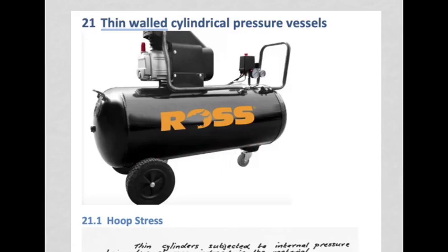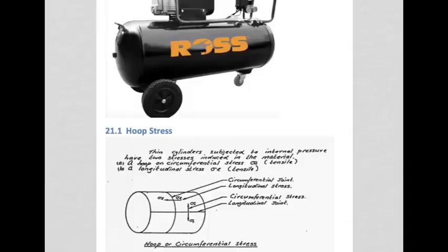The vessel is relatively thin-walled in relation to its size. To pick some arbitrary numbers: let's make this 500 millimeters diameter and the thickness of the steel around three millimeters — that would be considered a thin-walled pressure vessel. If you imagine that vessel having internal pressure greater than outside air pressure, the vessel would be trying to rupture, creating tensile stresses in the walls as it tries to get larger.